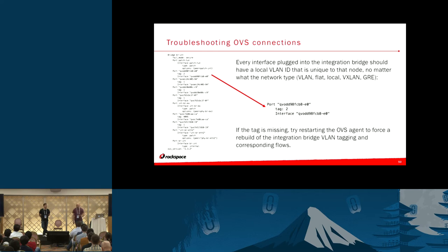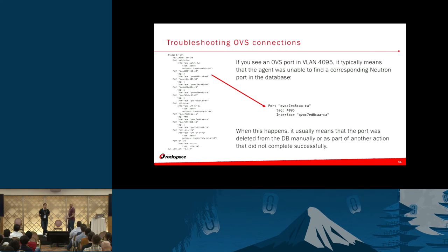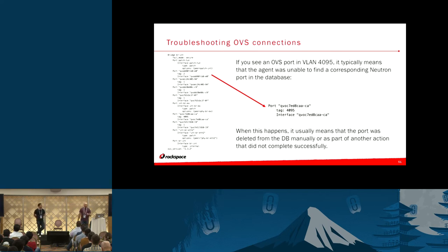If you ever see a tag missing, restart the OVS agent on that node because every port in the integration bridge should have a VLAN tag. If you see a tag of 4095, that's what they call a 'dead VLAN' — an error condition for that particular port. For example, if you do a 'neutron port-delete' and delete a port from the database, immediately on the compute node that port goes into VLAN 4095. You can consider that a security mechanism — Neutron has automatically moved it out of its local VLAN into a dead VLAN so there's no security jeopardy.